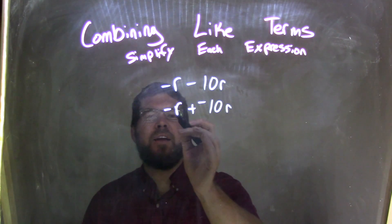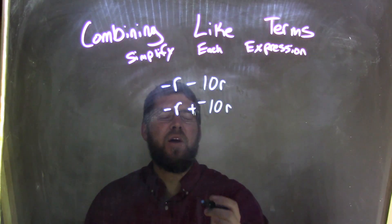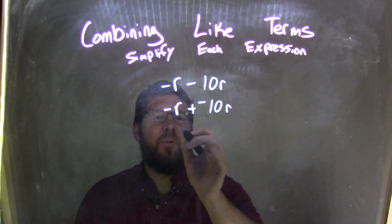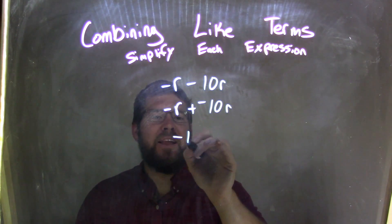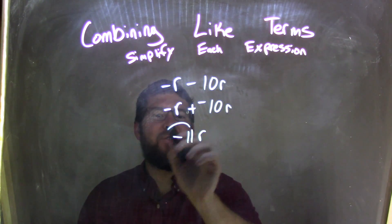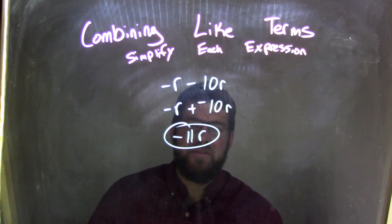So, we have negative 1r plus a negative 10r. Now, that's easy to see that 1 plus 10 is 11, so we have negative 11r as our final answer. There's no other terms to combine.